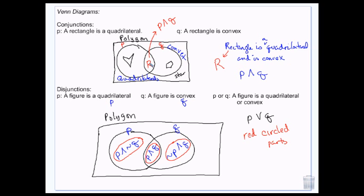Because OR means one or the other or both. We talked about spaghetti and meatballs — you could really love spaghetti, you could have both because it's an OR. You could be anywhere. Where you're not, though, is outside of the circles, because you're here, here, or here — you're in the circles because you're either convex, a quadrilateral, or both. So you don't exist out here in the rest of the square.